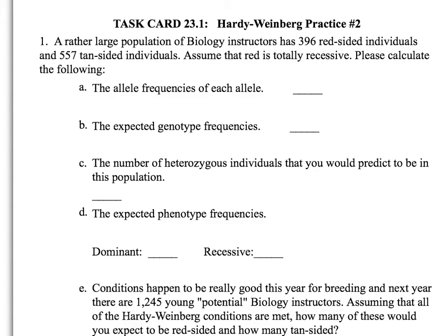In this video I'm going to go over not only the answers to the practice sheet number two but also a little bit about how you find those answers so you can see the procedure as well. In the first question we first need to find the total number of individuals, so you have to take the 396 plus the 557 and you get a total of 953 individuals.